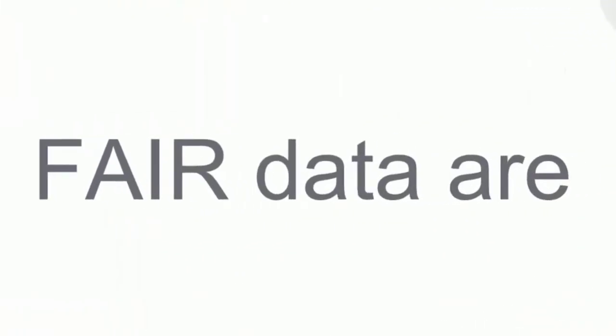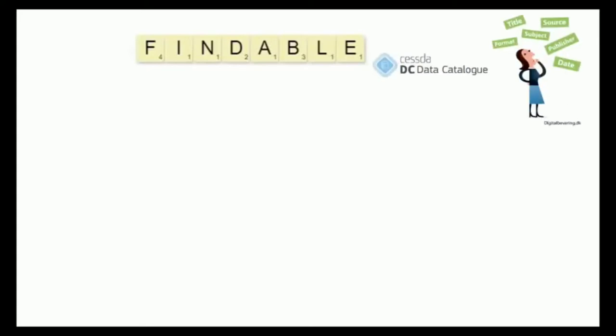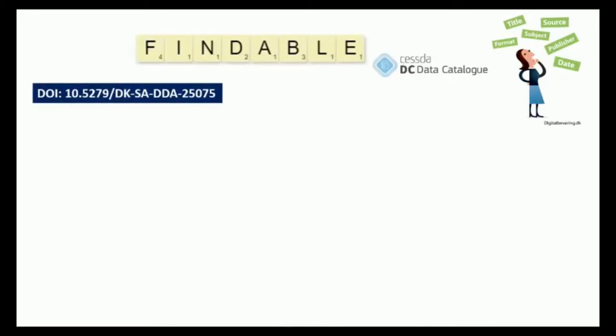To reuse data, you need to be able to find them. This means that they are indexed and discoverable via search engines and catalogues and have machine-readable metadata. Unique identifiers such as a digital object identifier, and detailed metadata that enable discovery and provide detail about the content to the user, facilitate this.